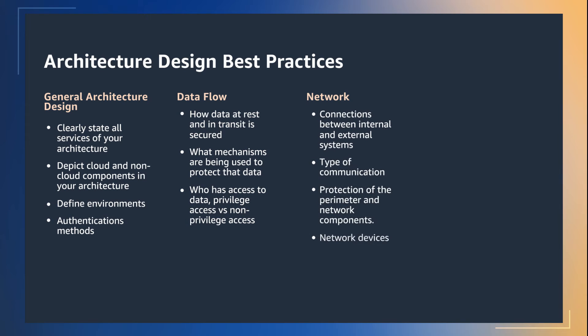Network diagrams should illustrate logical network separation and communication within your network devices such as endpoints, security groups, nodes, and any other cloud or physical hardware. The network diagram is a living document that should be updated and reviewed regularly for accuracy. They should include a legend, all network devices, all connections to network devices, type of communications between network devices, whether it's encrypted, and what level of encryption is being used in that connection.